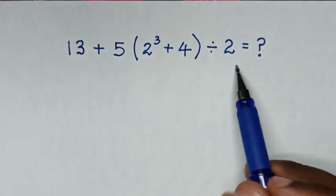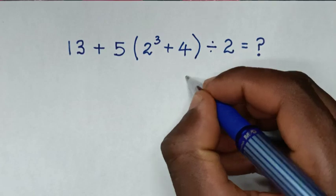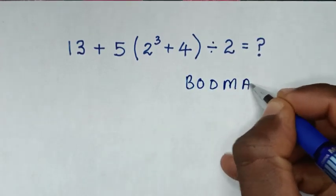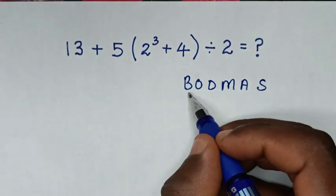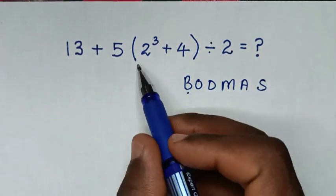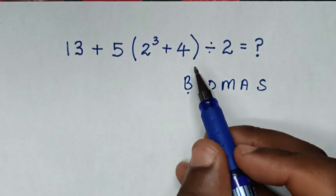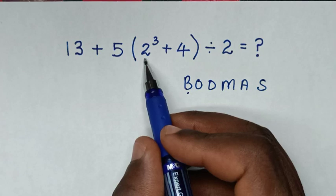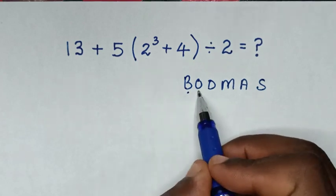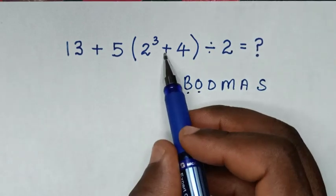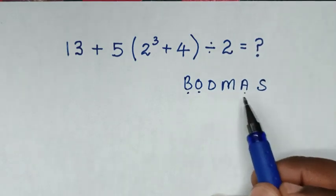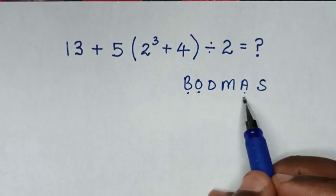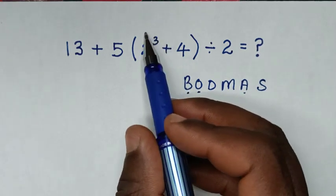So from this math problem, we'll solve it by using BODMAS rule, whereas B is bracket. Here we have this bracket, and operation inside this bracket is 2 power 3, which is order. From order and addition, we'll start with order, then addition inside this operation inside the bracket.